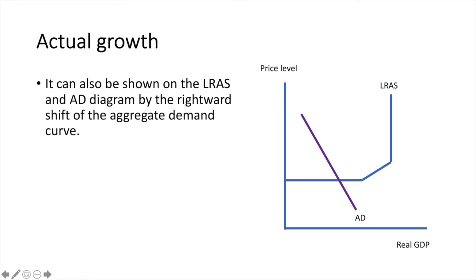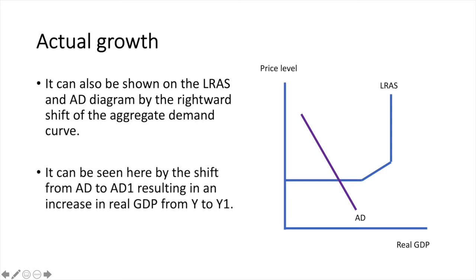It can also be shown on the LRAS and AD diagram by the rightward shift of the aggregate demand curve. It can be seen here by the shift from AD to AD1, resulting in an increase in real GDP from Y to Y1.